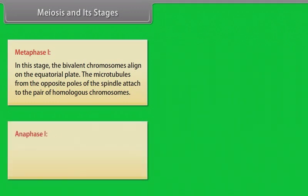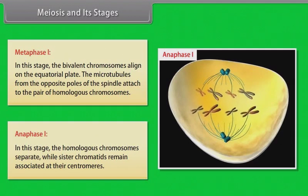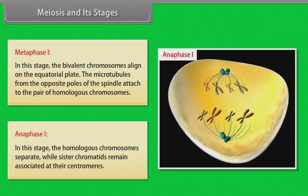Anaphase I is the next stage. In this stage, the homologous chromosomes separate while sister chromatids remain associated at their centromeres.